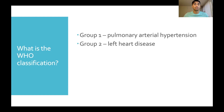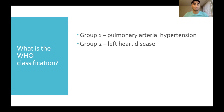Group two is due to left heart disease. Because the blood eventually goes back to the left side of the heart from the lungs, if there's a problem on the left side of the heart, blood is going to back up into the lungs and the pulmonary vessels, causing an increase in pressure. It's important to know that group two is the most common type of pulmonary hypertension.